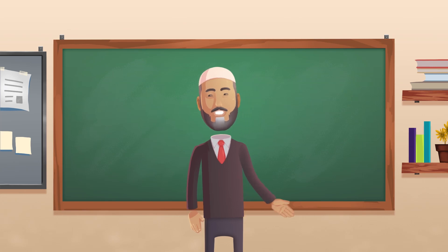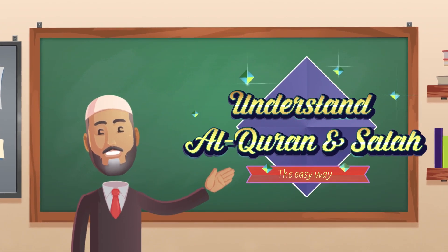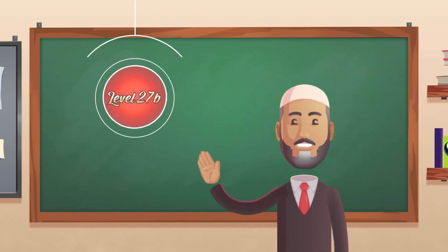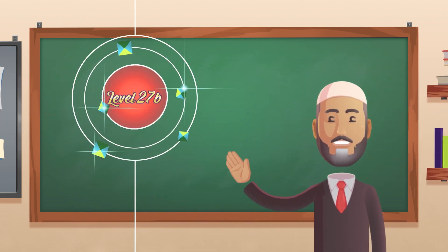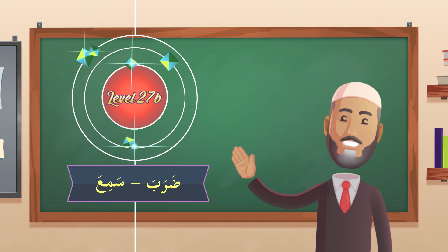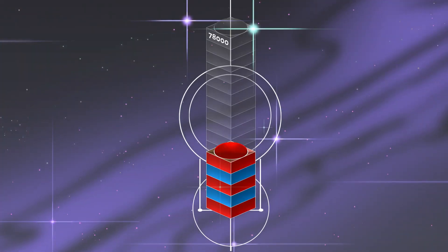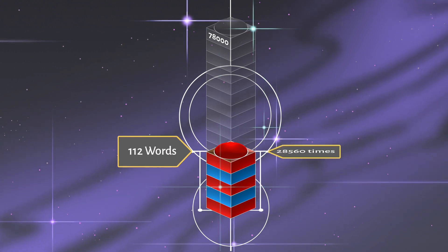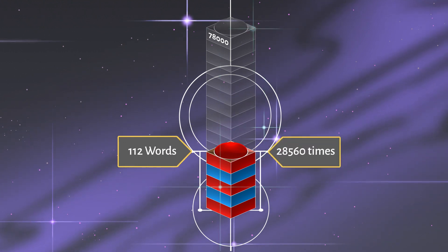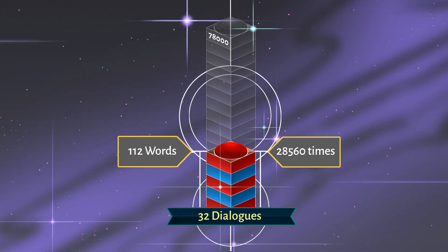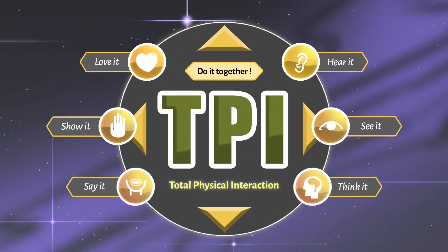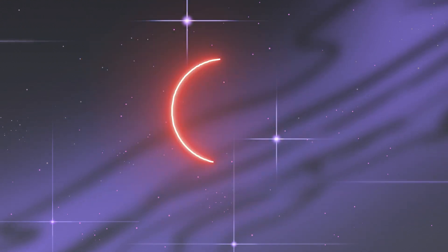بسم الله الحمد لله والصلاة والسلام على رسول الله. I Understand Quran and Salah the easy way — 3-minute series, lesson number 27b, in which we will learn فعل ماضي forms for two verbs: ضربة and سمع. By the end of this lesson we will learn 112 words which occur almost 28,560 times in the Quran. We will also learn 32 dialogues using فعل ماضي of these two verbs. Make sure to use TPI.